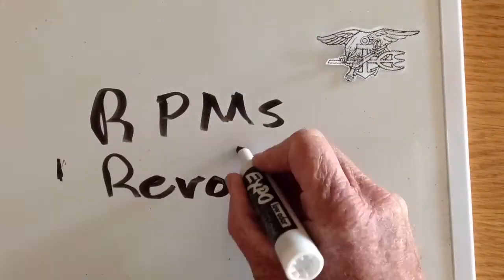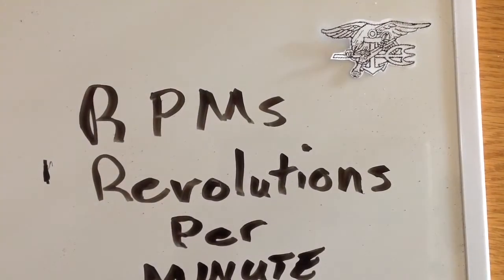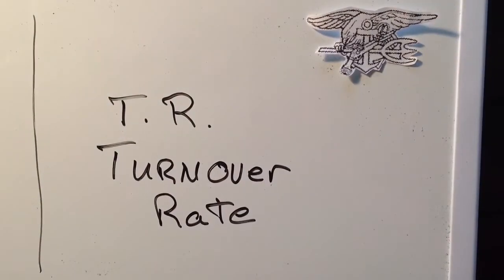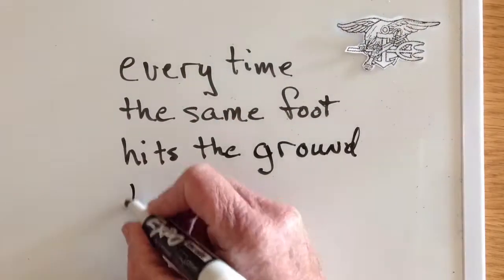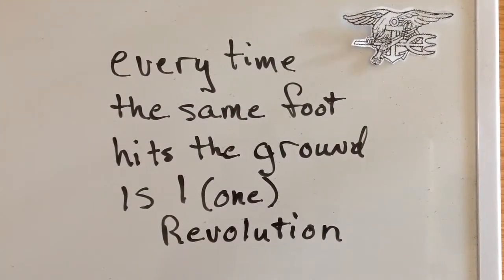The paces we're going to acquire are revolutions per minute. Every time the right foot hits the ground is one revolution per minute. A lot of runners in high school, collegiate running, and other clubs refer to RPMs as turnover rate — it's the same thing. As you're counting for one minute, every time the same foot hits the ground, that is one revolution per minute.